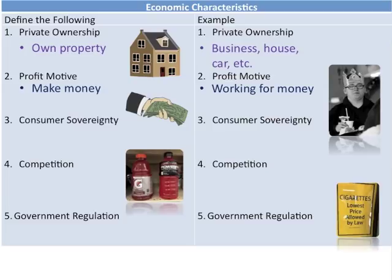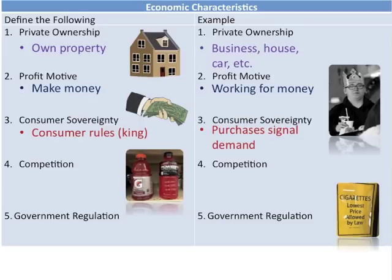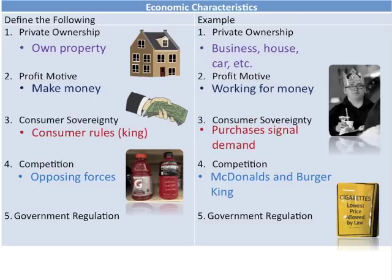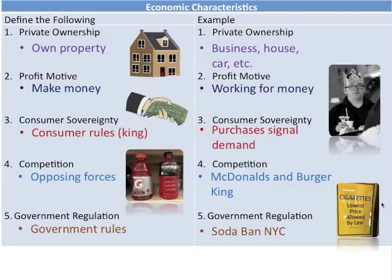Consumers are sovereign in market economies — they rule through their dollar vote, and their purchases signal to sellers what to produce. Competition is vital, where opposing forces create price stability and a variety of goods and services. Government regulation exists so that markets behave as they should; when government makes more rules its hand grows bigger, and when it deregulates its hand gets smaller. New York's proposed ban on certain size sodas is an example of government regulation in a market.